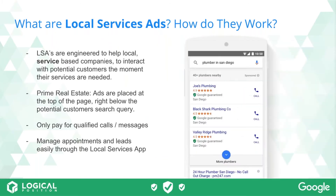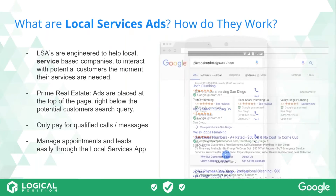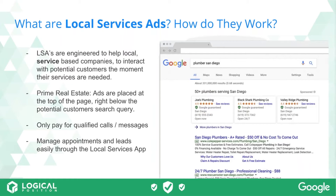Local service ads can be seen on mobile and also on desktop. They are ads specifically engineered to help local service-based companies. Within Google this has taken off really rapidly because of how useful it's been for both the companies advertising and the people looking for these local services. It's prime real estate — top of the page, even above those pay-per-click search ads. You only pay for qualified calls or messages, so it is very leads-based.